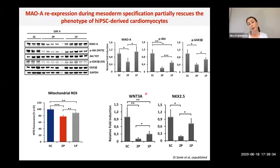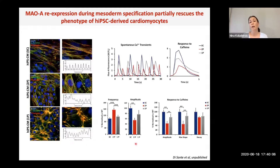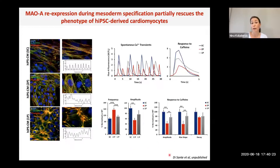This rescue also occurred at the functional and structural level. Sarcomere organization, which was disorganized and misaligned with siRNA as seen in the knockout, was rescued by re-expression of the enzyme. Calcium cycling and homeostasis were also partially rescued — calcium transients were still different from scramble RNA treated cells, but we did get a partial rescue of calcium homeostasis and SR calcium load.